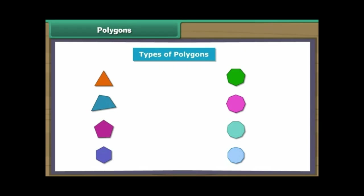They are triangle, quadrilateral, pentagon, hexagon, heptagon, octagon, nonagon, and decagon. Now we will learn more about each polygon one by one in detail.